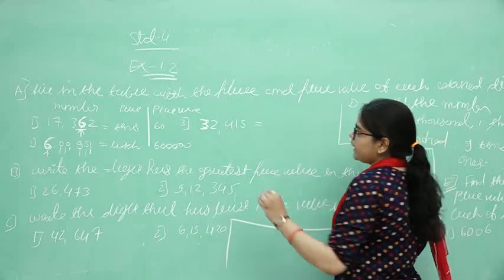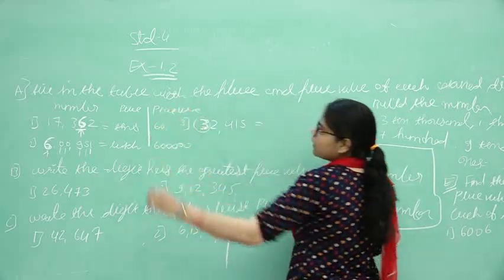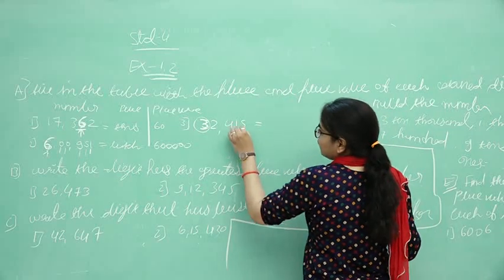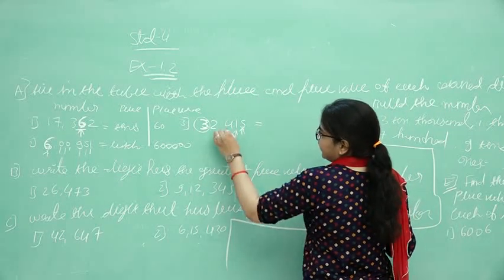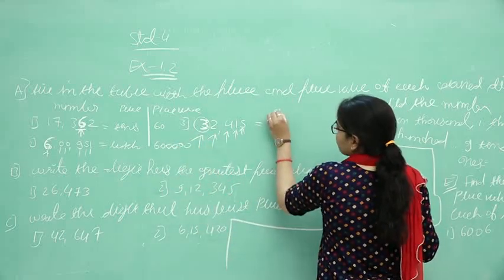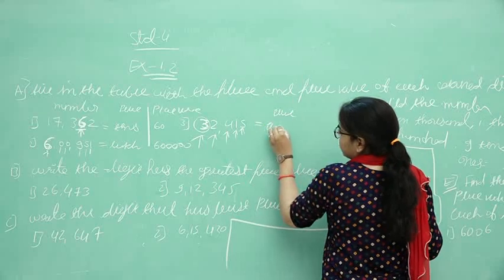Then after, here 32,450. What is the colored digit? It is 3. What is the place of 3? Then check out: 1, 10, 100, 1000, and 10,000. The place of 3 is 10,000.